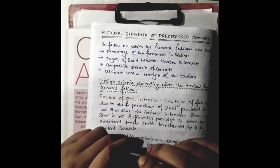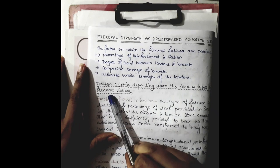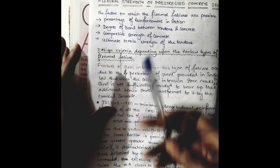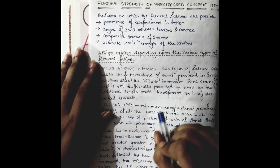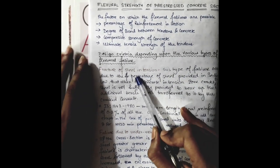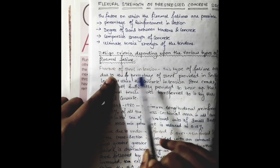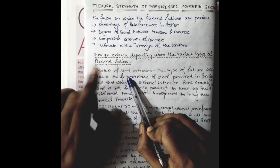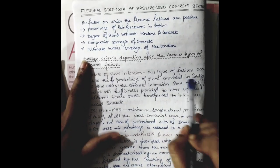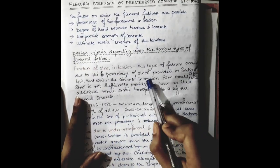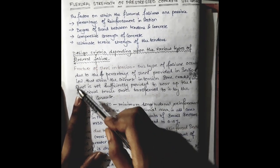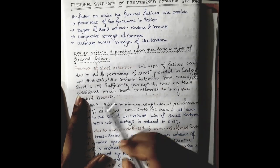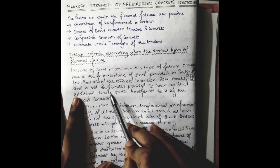Let's come to the design criteria of flexural strength. The design criteria depending upon the various types of flexural failures are the types we have already gone through in our RCC classes. The first type is the fracture of steel in tension. This type of failure occurs due to the percentage of steel provided in section being low.